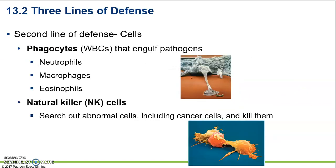Now let's move on to the second line of defense. There are two types of cells. First, phagocytes — remember 'phago' means eat. They engulf pathogens. We can see a bacterium here with a branch of a white blood cell coming in, grabbing it and breaking it down with lysosomes. They engulf and eat foreign material; they recognize it's not us.